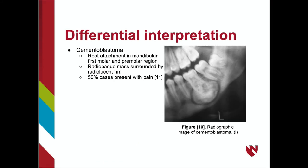Cementoblastoma is a benign neoplasm consisting of cementoblasts. These lesions typically occur in the mandibular first molar and premolar region. This lesion consists of a radiolucent rim surrounding the radiopaque mass that is attached to the root. In comparison, idiopathic osteosclerosis lacks a radiolucent capsule and is not attached to the root of the tooth. Also, cementoblastoma may be associated with pain, as 50% of patients complain of associated pain, whereas idiopathic osteosclerosis lesions are asymptomatic.